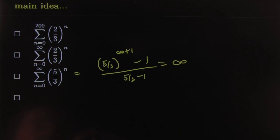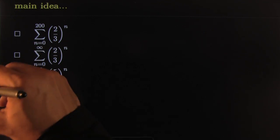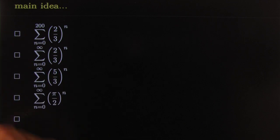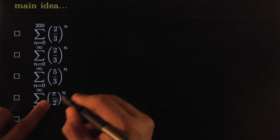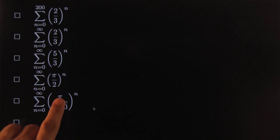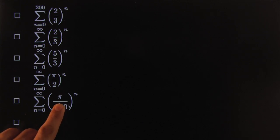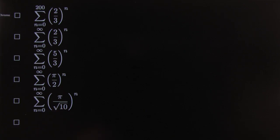These geometric series are extremely easy. Take pi over three: pi is bigger than three, so the ratio is bigger than one — it diverges. What about pi over the square root of ten? You just need to figure out whether pi is bigger than the square root of ten or not, and from that determine whether the series converges or diverges.